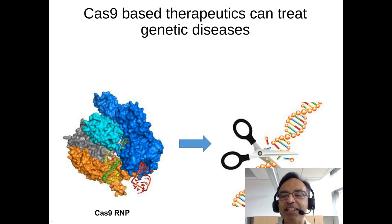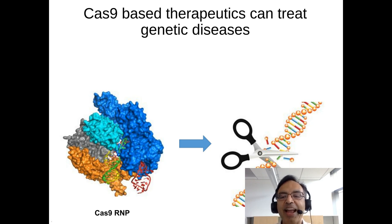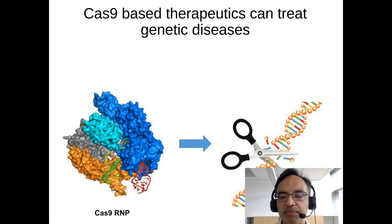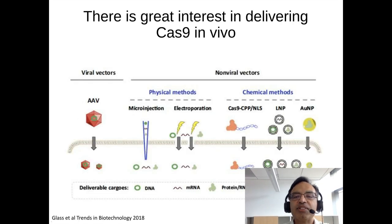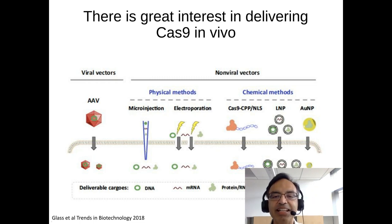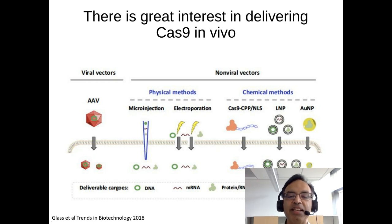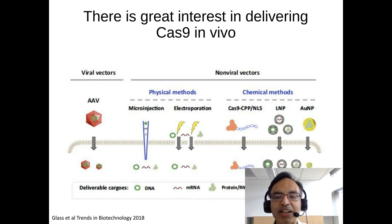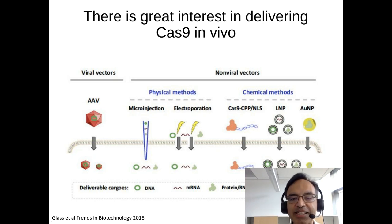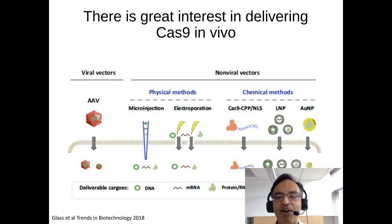In addition, some Cas9 gene editing applications require performing homology-directed DNA repair, and that even requires delivering a donor DNA. There is therefore great interest in developing strategies for delivering Cas9 into cells and in vivo. A variety of methods have already been developed, which can be broken down into two broad categories: those based upon viral vectors and those based upon non-viral vectors.